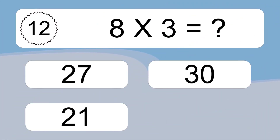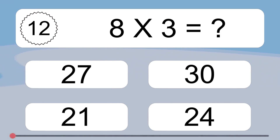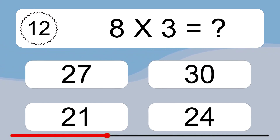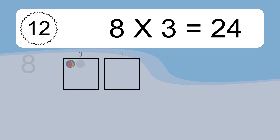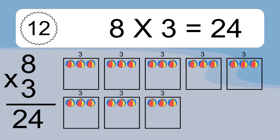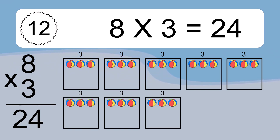8 times 3 equals what? 8 times 3 equals 24. We have 8 boxes, and each box has 3 colorful balls inside. If you count all the balls in all the boxes together, you will have 8 times 3 balls. This equals 24 balls.